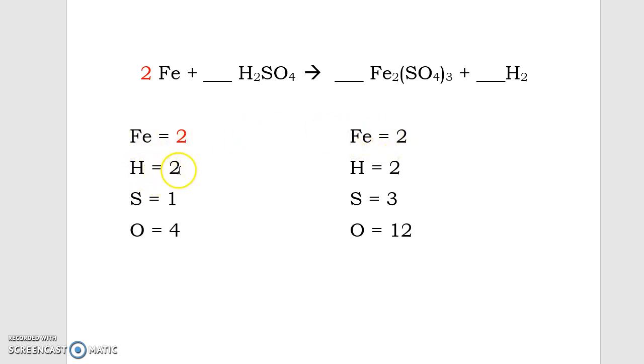Our hydrogens, we have 2 on the left, 2 on the right, so we're going to leave those alone for now. We're going to move on to sulfur. I have 1 sulfur on the left on my reactant side, 3 on the right. So I'm going to need to bring this number up to 3, which means I'm going to multiply my coefficient up here by 3. That's going to change this number to a 3, and this sulfur to a 3.